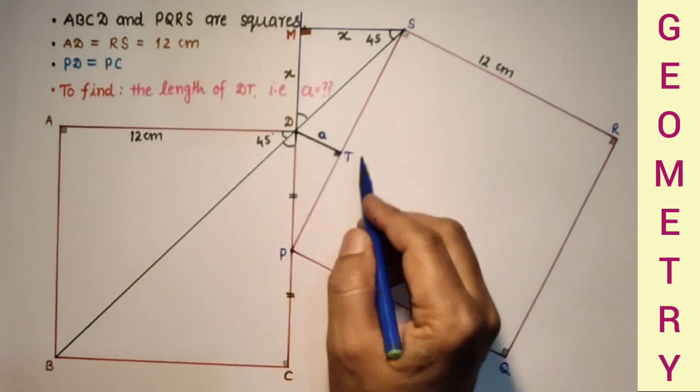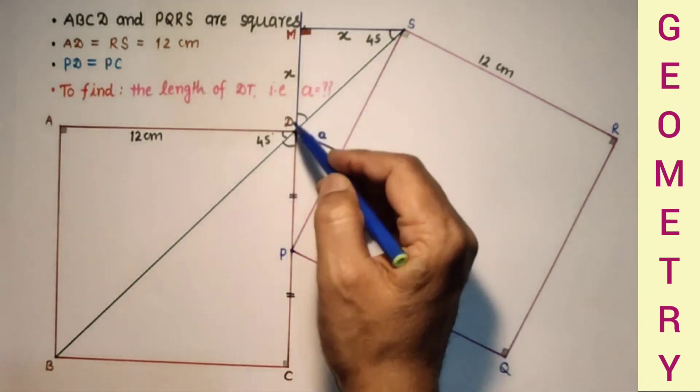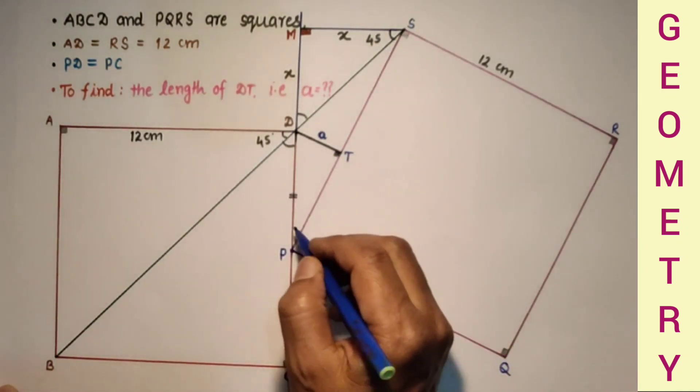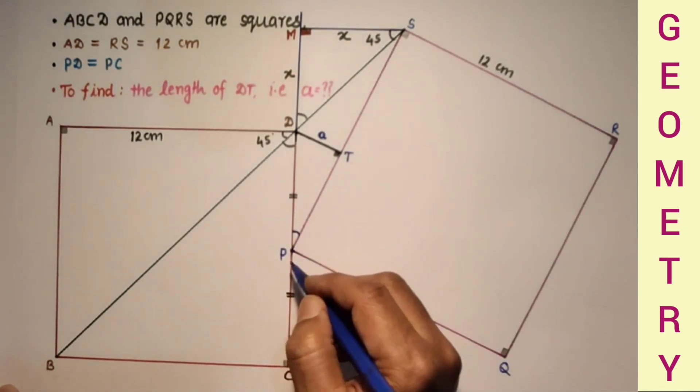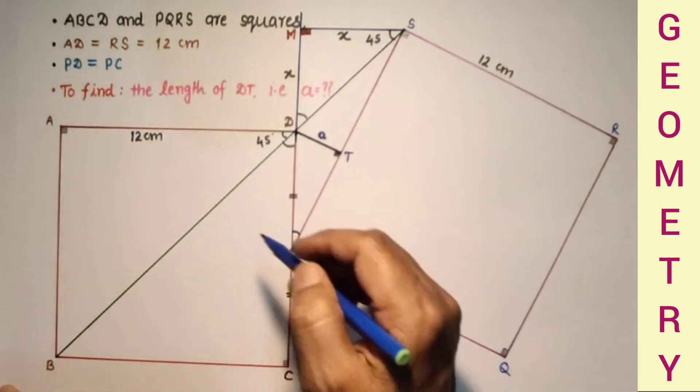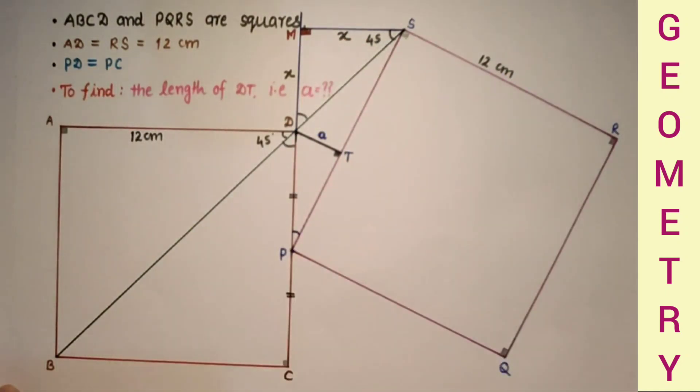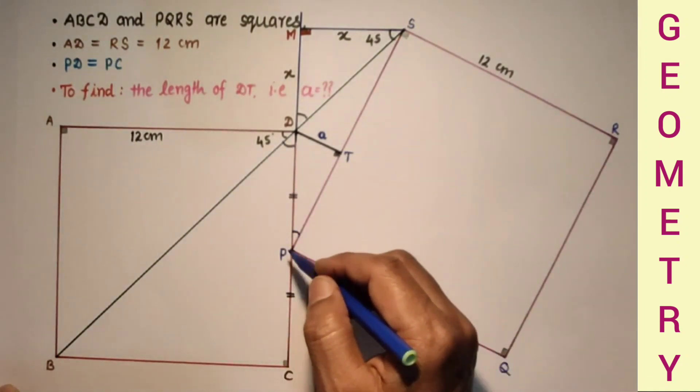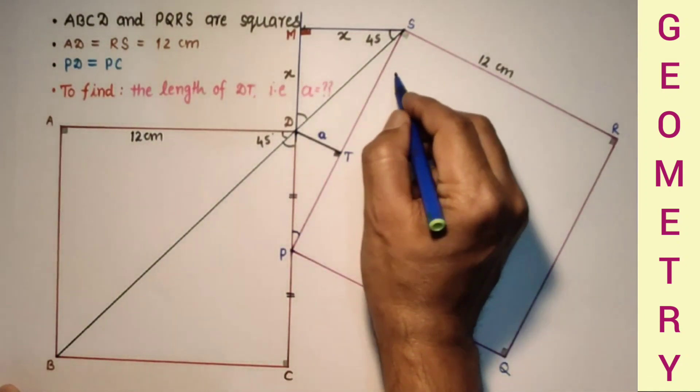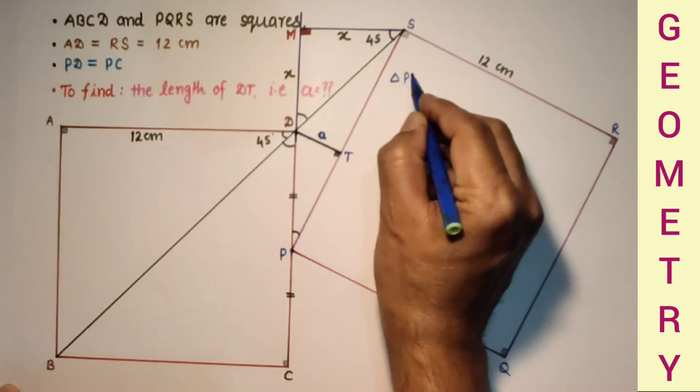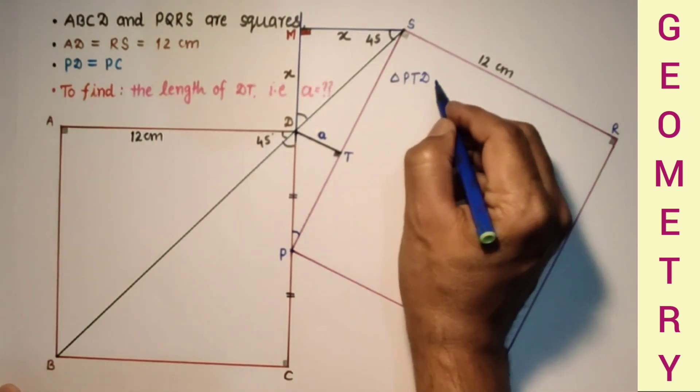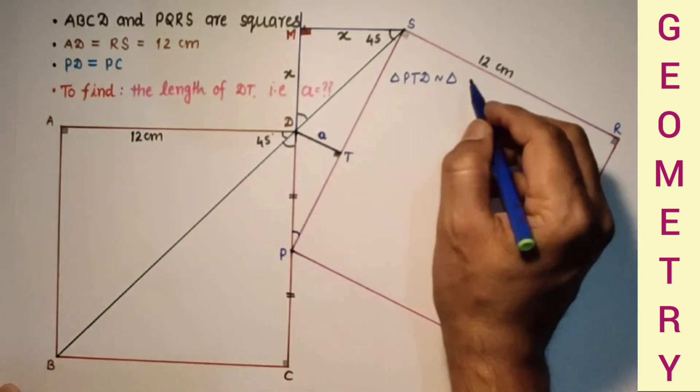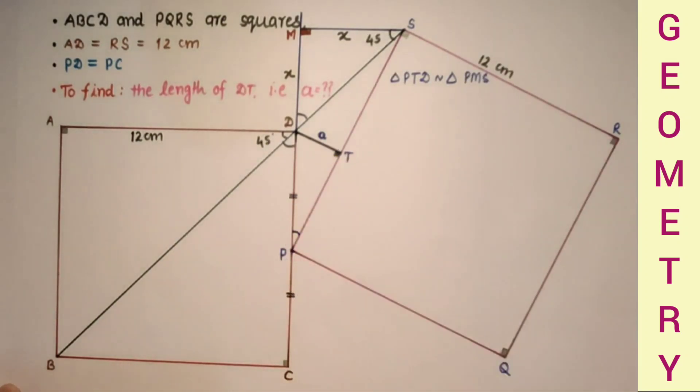Now triangle DTP and triangle MSP are similar, because angle P is common in the bigger right angle triangle and this smaller right angle triangle. So triangle PTD is similar to triangle PMS by AA test of similarity.